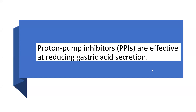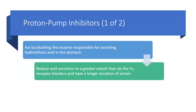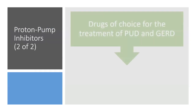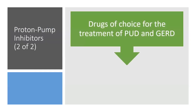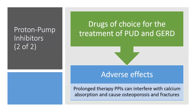Proton pump inhibitors are effective at reducing gastric acid secretion. They act by blocking the enzyme responsible for secreting hydrochloric acid in the stomach. They reduce acid secretion to a greater extent than H2 receptor blockers and have a longer duration of action. Their beneficial effects last three to five days after therapy is stopped. They are the drug of choice for peptic ulcer disease and GERD. However, prolonged PPI therapy can interfere with calcium absorption and cause osteoporosis and fractures.